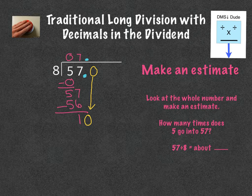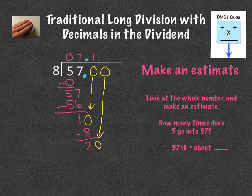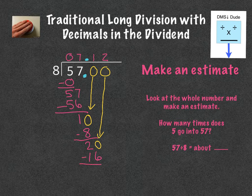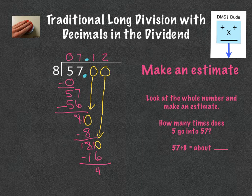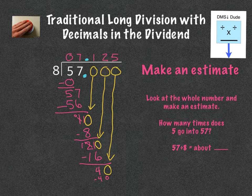Now we have technically a zero here, so we can bring this down. Then how many times will eight go into 10? It goes in one time — eight. Subtract and I get two. I'm not done, so I'm going to add another zero. Bring that zero down. How many times does eight go into 20? It goes in twice. Two times eight is 16. Subtract and I get four. Then I'm still not done, so I'm going to add a zero here. Bring it down. Eight goes into 40 five times. Five times eight is 40. Subtract and we get zero. My estimation — how many times will eight go into 57? It goes in about seven times because eight times seven is 56.